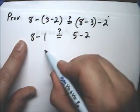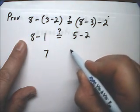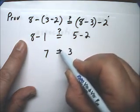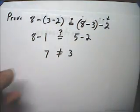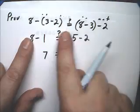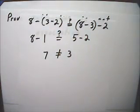8 minus 1 is 7. 5 minus 2 is 3. So this is a counterexample. So subtraction is not associative.